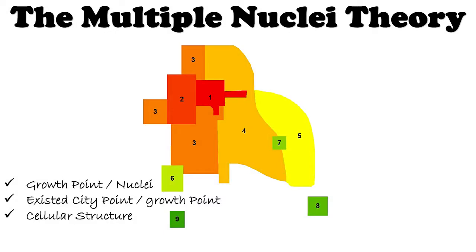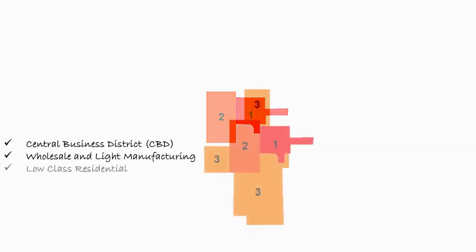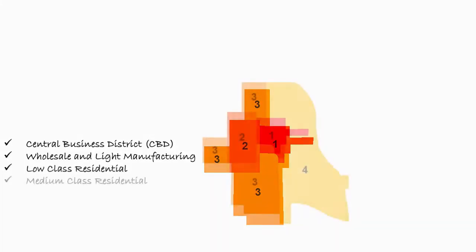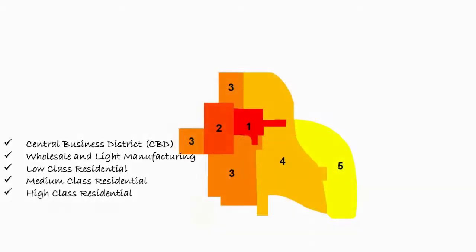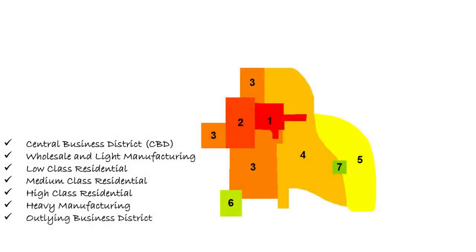These growth points are: CBD (Central Business District), wholesale and light manufacturing, low-class residential, medium-class residential, high-class residential, heavy manufacturing, and outlying business district.